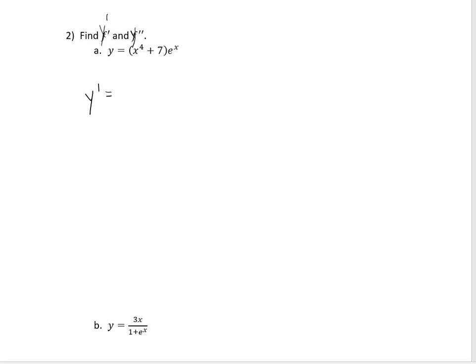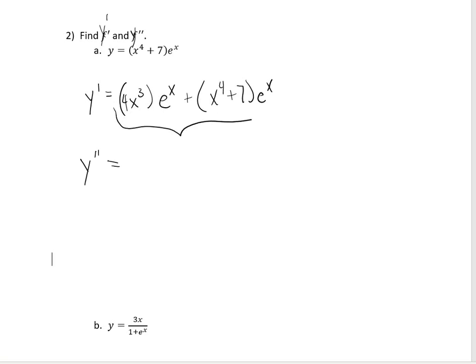When we find the derivative of x to the 4th plus 7 times e to the x, we're going to use the product rule. That gives us 4x to the 3rd times e to the x, plus x to the 4th plus 7 times e to the x — the derivative of the first part times the second left alone, plus the first part left alone times the derivative of the second.